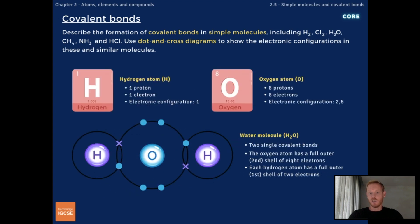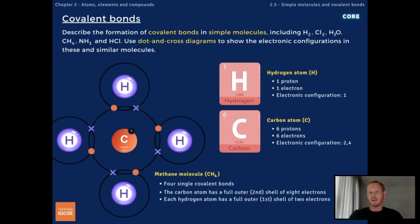Next, we have water, which is made of hydrogen and oxygen. Because oxygen has only six electrons in its outer shell, it forms two single covalent bonds with two hydrogen atoms, resulting in a stable molecule with the formula H2O. The formula for methane is CH4, which tells us that it contains one carbon and four hydrogen atoms. Carbon has four electrons in its outer shell, so it forms four single covalent bonds, leaving it with a full outer shell of eight.